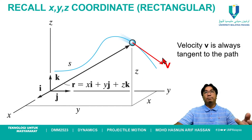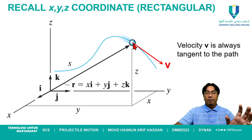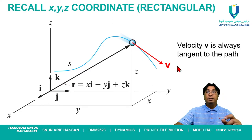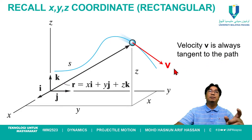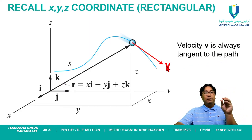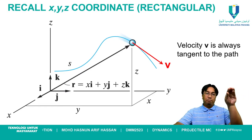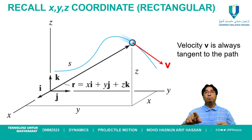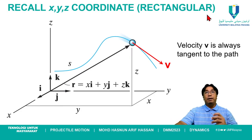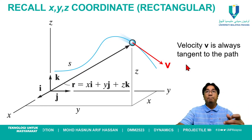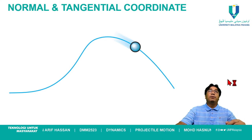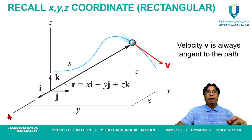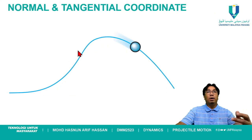Before going to normal and tangential components, let's recall that in rectangular components, the direction of velocity is always tangent to the path. Every time a particle moves along its trajectory, the direction of velocity will always be changing — it will always be tangent to the path at that moment.